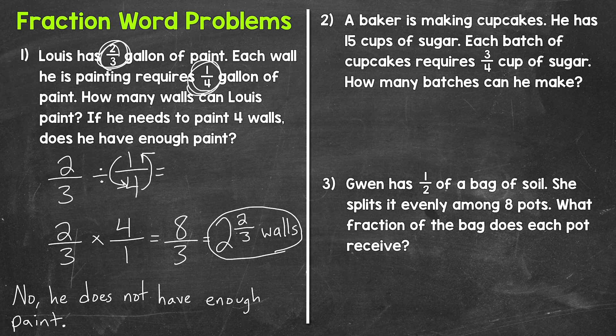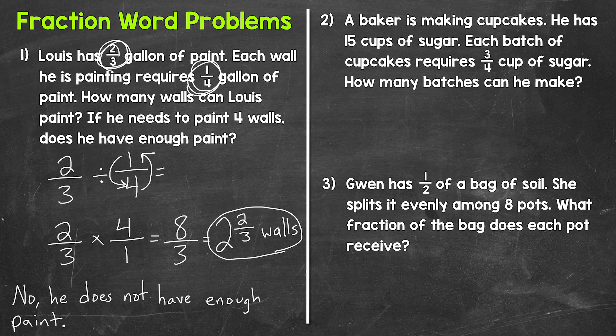Let's move on to number two, where we have a baker is making cupcakes. He has 15 cups of sugar. Each batch of cupcakes requires three-fourths of a cup of sugar. How many batches can he make? So what we need to do here, the baker is starting with 15 cups of sugar and he's splitting or dividing those 15 cups of sugar into groups of three-fourths of a cup of sugar.